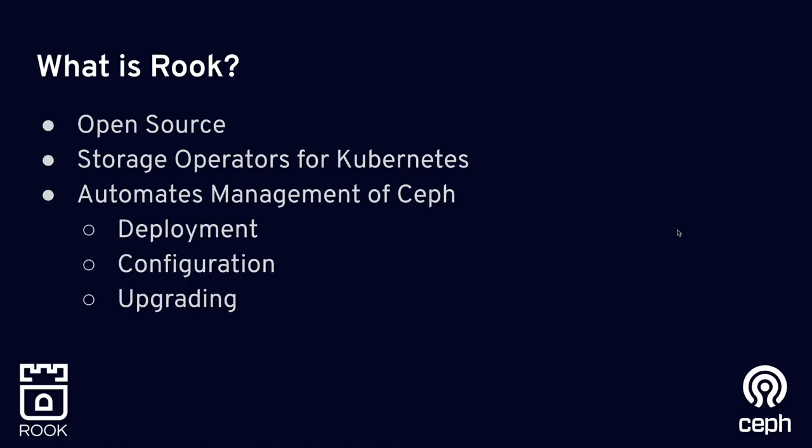So, what is Rook? Rook is an open source project, Apache 2 license, and it is a collection of storage operators for Kubernetes, for multiple storage providers including Ceph, Cassandra, and NFS and a few others. But today we're going to focus on the Ceph operator for this deep dive.